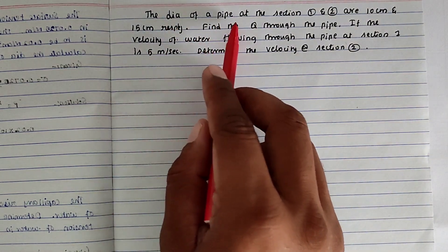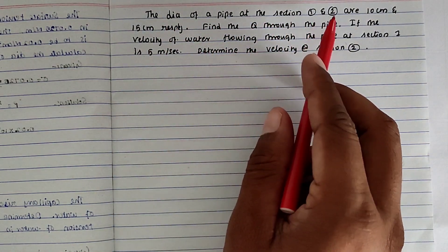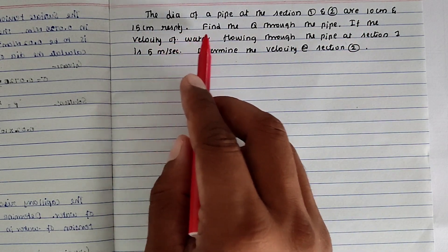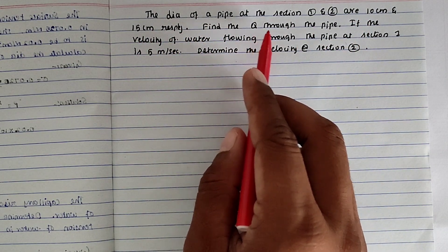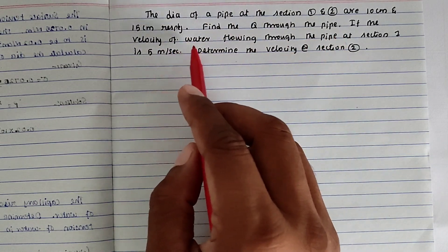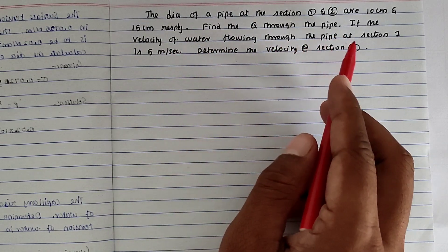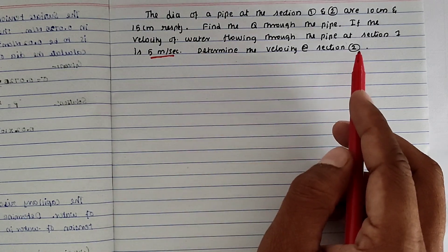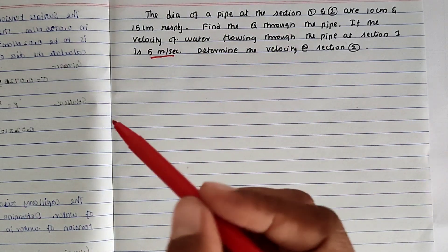The problem is: the diameter of the pipe at section 1 and 2 are 10 centimeter and 15 centimeter respectively. Find the discharge Q through the pipe. If the velocity of water flowing through the pipe at section 1 is 5 meter per second, determine the velocity at section 2.